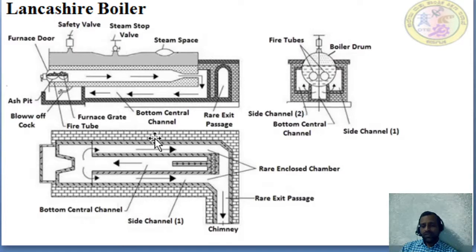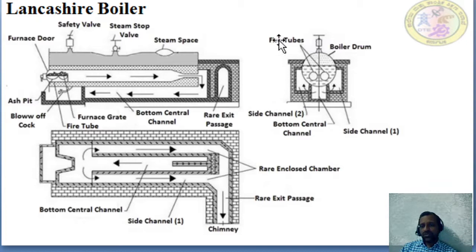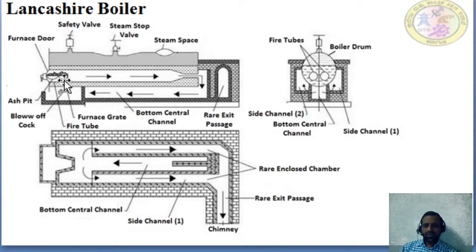This boiler is mounted on a brick wall. In the side view, there is the boiler drum placed on the brickwork. The two fire tubes are shown here, along with side channel 1 and side channel 2, and the bottom central channel. There is also the ash pit and the furnace door.